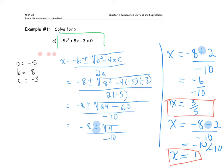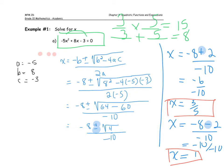If I were factoring this, I'd be looking for two numbers that multiply to give me 15 — the product of my first and last terms — and add to give me 8. Those numbers are actually 3 and 5, which are easy to find. So factoring is reasonably quick and probably more efficient than using the quadratic formula here.